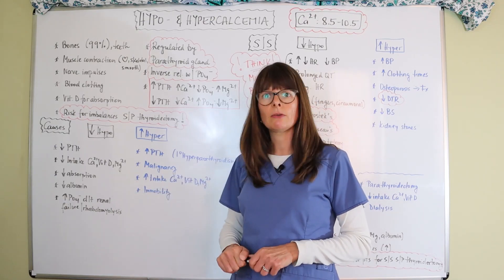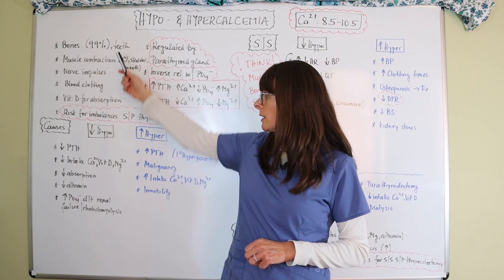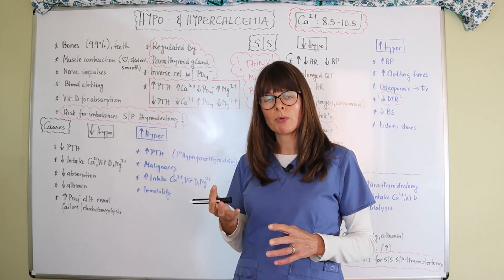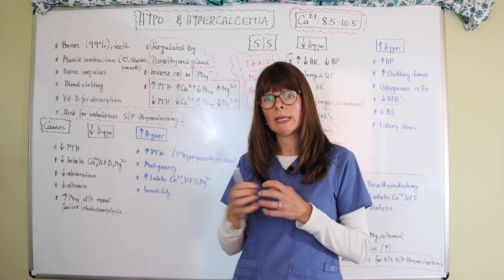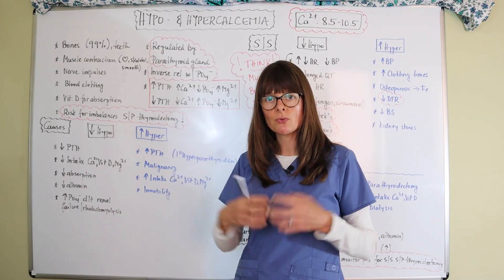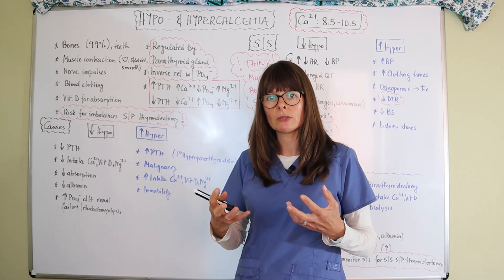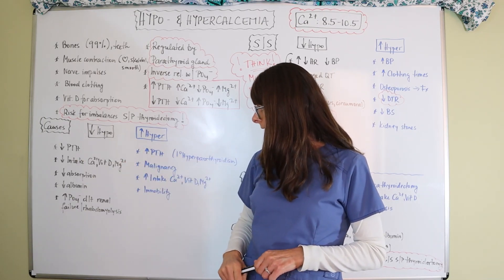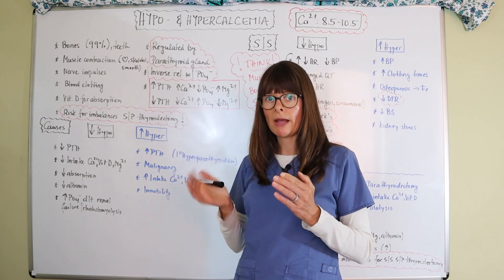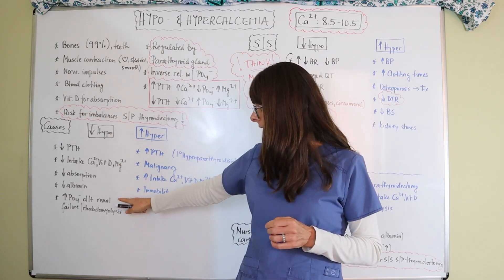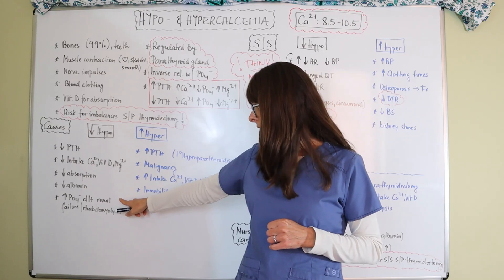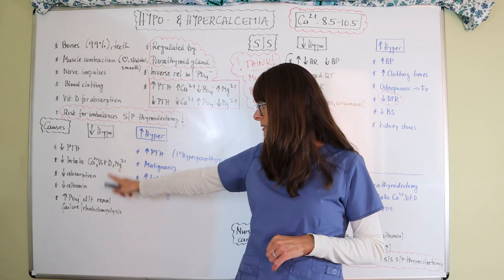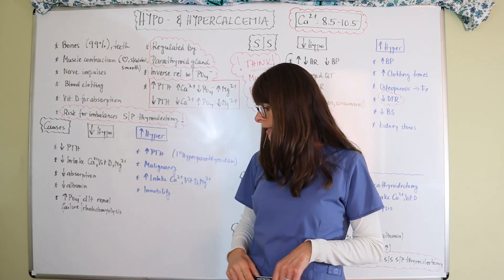And then decreased albumin levels, because most of the calcium is stored in bones, but also the calcium that is floating around in the serum, that small percentage is mostly bound to albumin. So if we don't have that albumin available in our bloodstream, we're not going to have anything to bind that calcium and therefore it will have hypocalcemia. And then because of that inverse relationship between calcium and phosphorus, when there is increase in phosphorus level because of renal failure or a condition called rhabdomyolysis, calcium levels will go down.